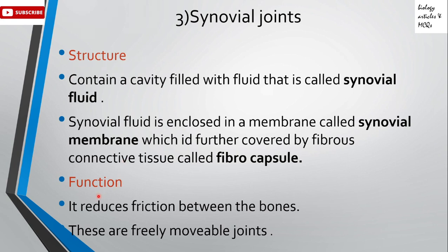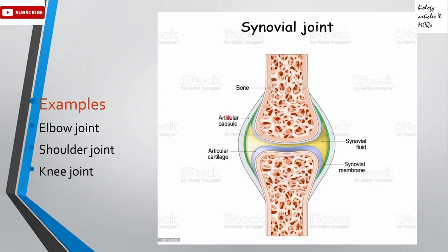We will learn about the synovial joint — mainly the structure and function of the synovial joint, and then the types. According to the structure of the synovial joint, there is a cavity present in the synovial joint. You can see that there are two bones and there is a cavity present between them. This cavity is not present in any other joint — it is only the main feature of the synovial joint. The cavity is filled with fluid called synovial fluid.